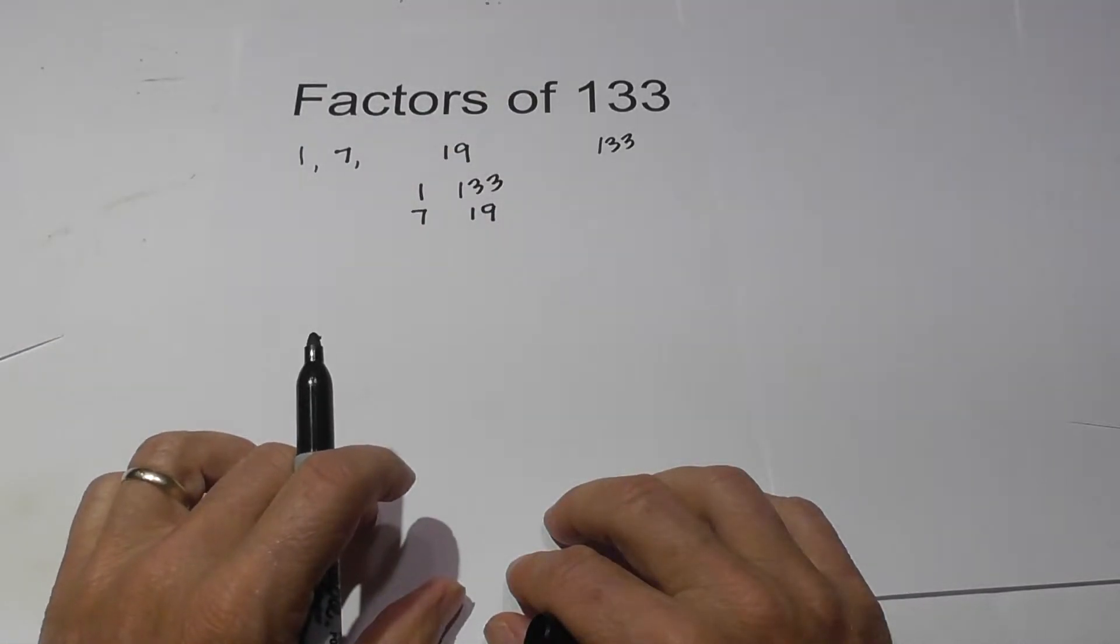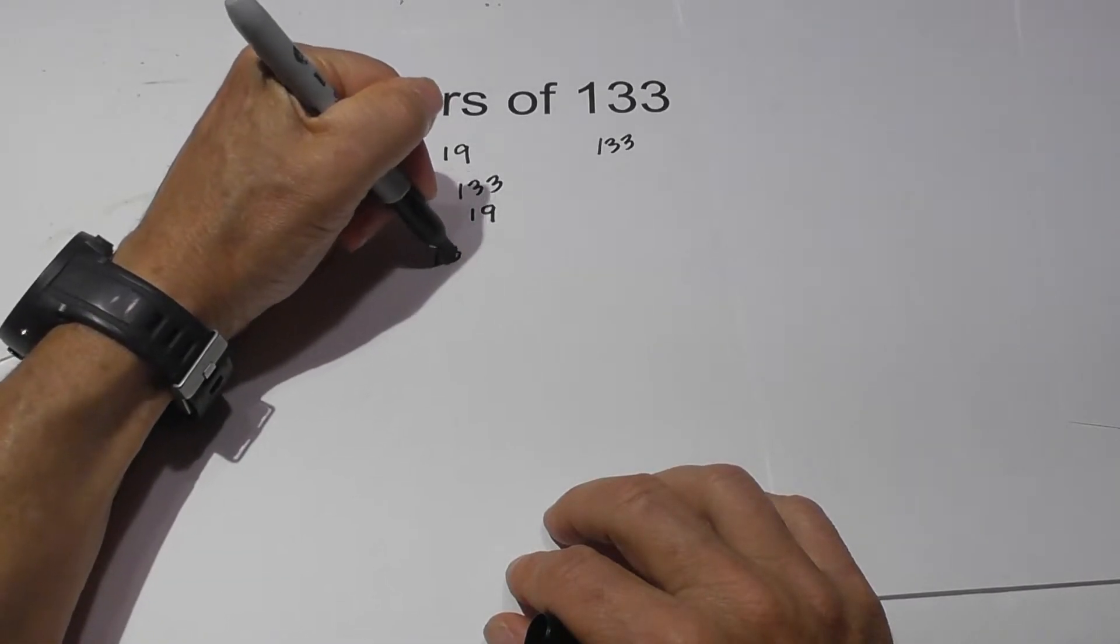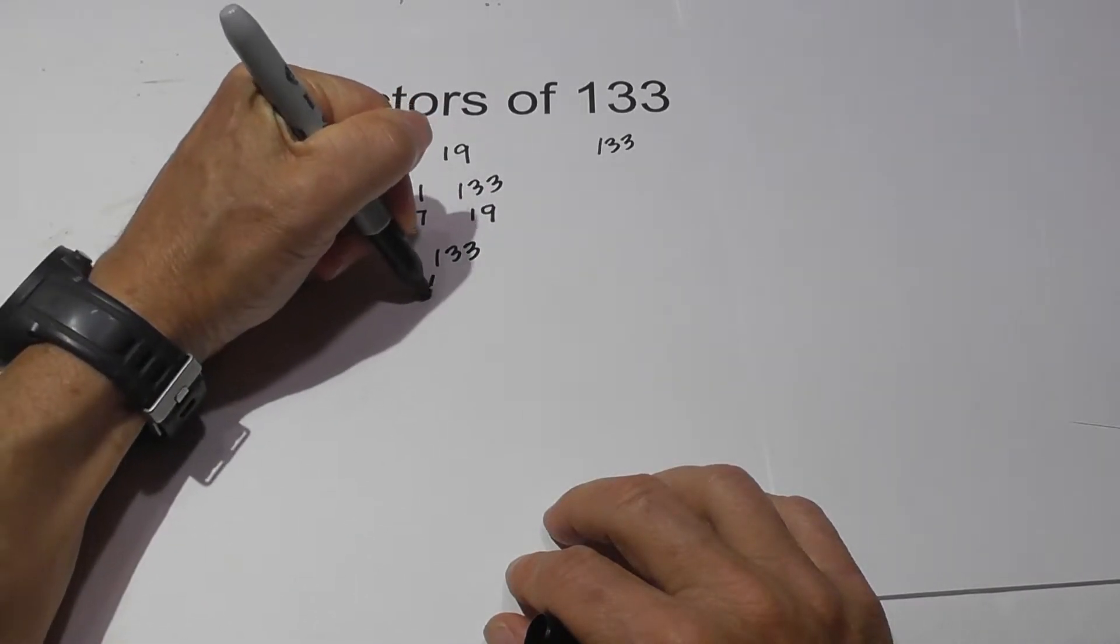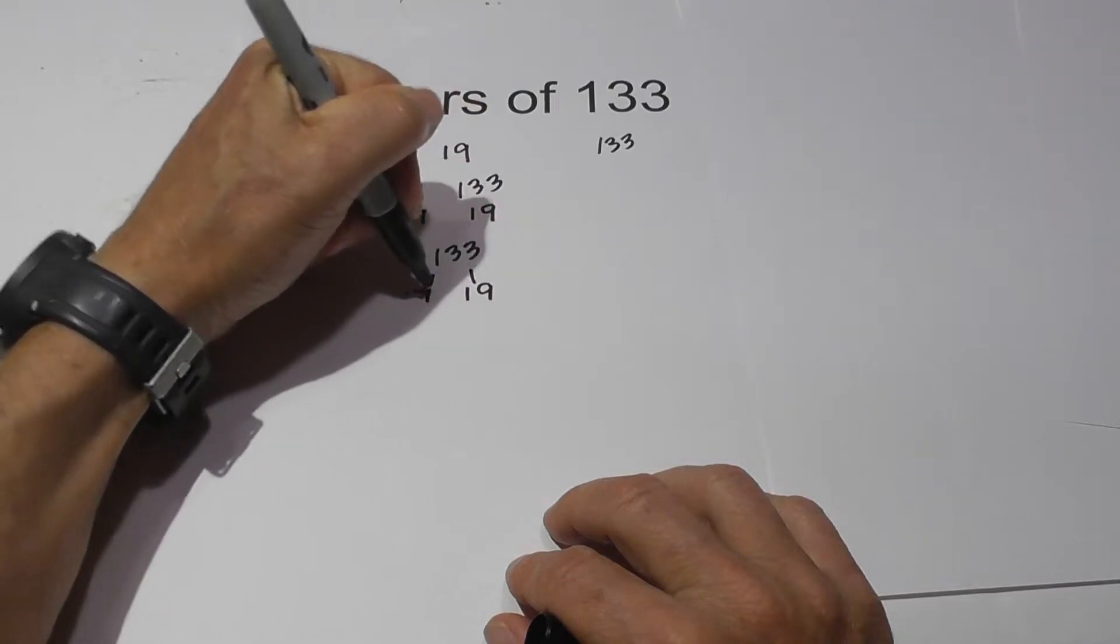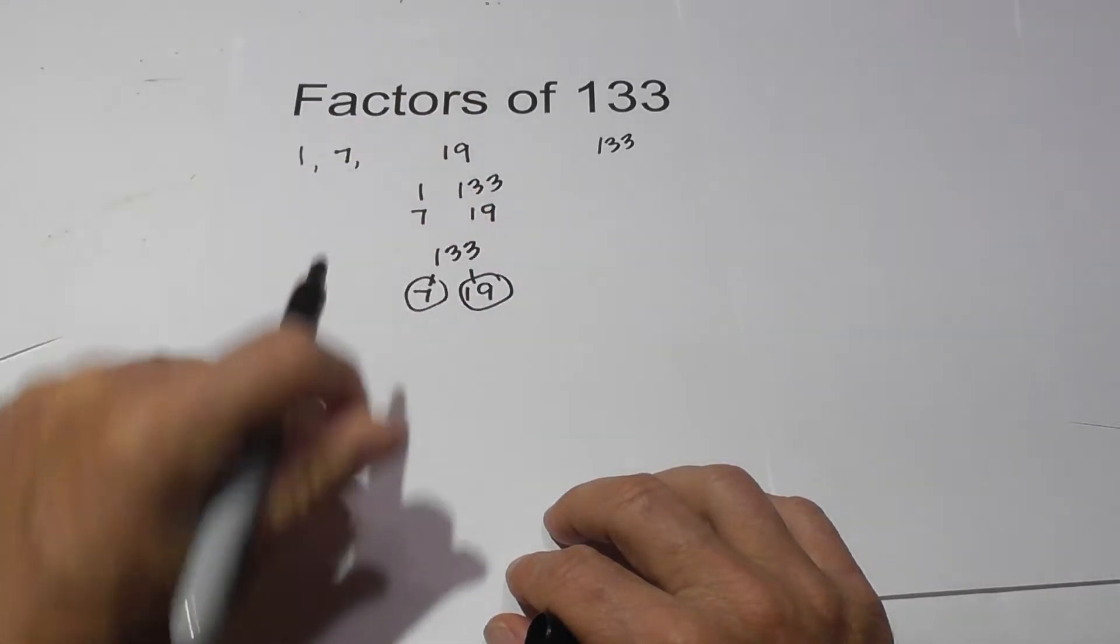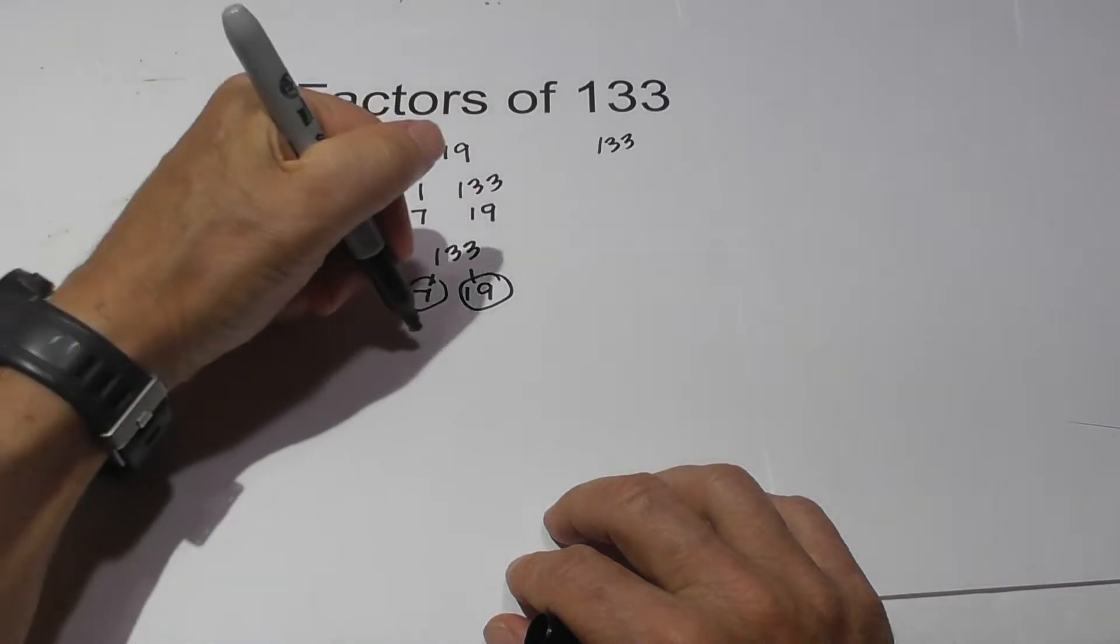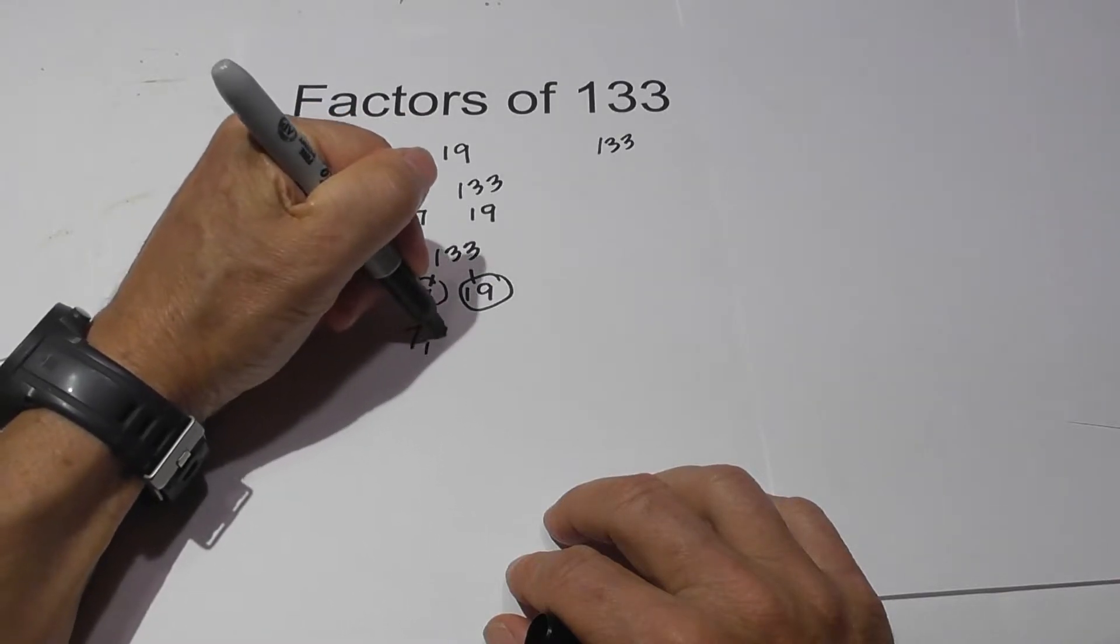Now let's look at the prime numbers of 133 and there's not that many. 7 times 19, circle the 7 and the 19 because they are prime. So the prime factors are 7 and 19.